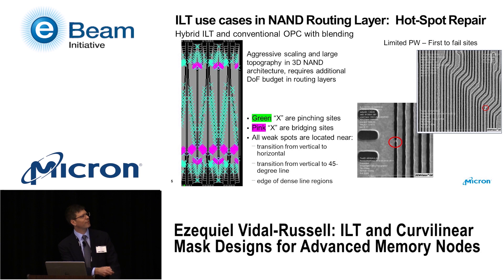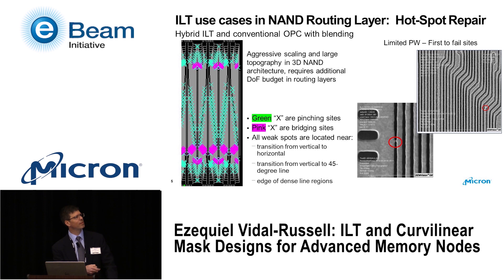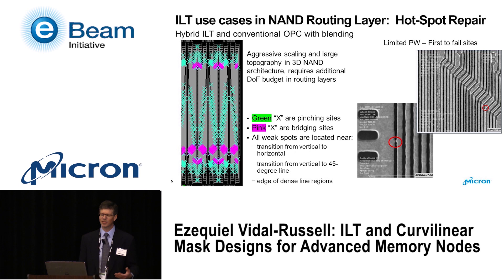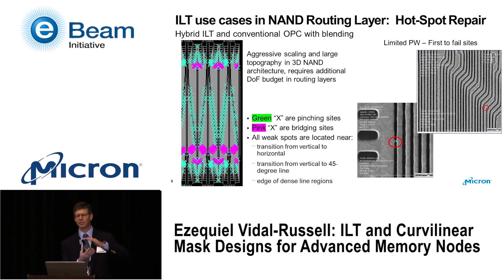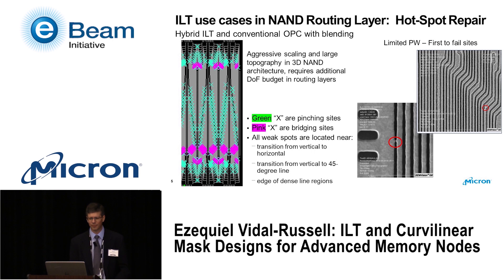In the graph on the left, you can see part of this routing layer design, where by use of a model we identify the areas that need improved process window — the hotspots — mark them, and limit the ILT application to those areas. In 3D memory architectures, incoming topography from previous steps is a significant problem, as these are very high aspect ratio chips. So we need to guarantee additional depth-of-focus budget to compensate for that incoming topography.